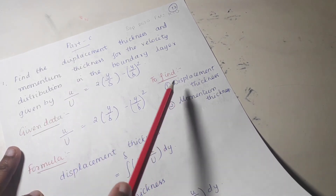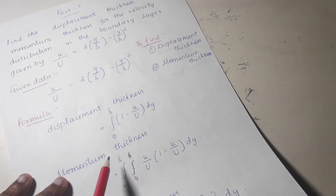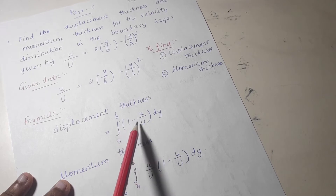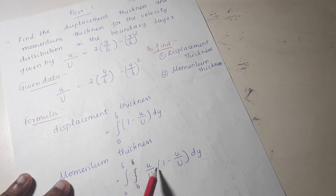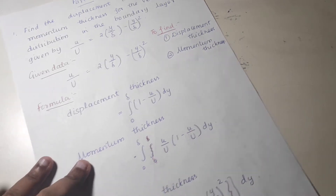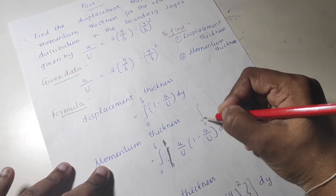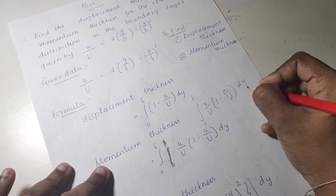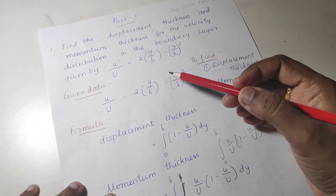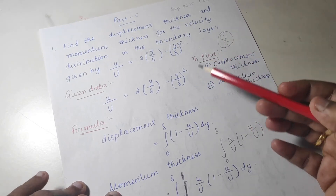The given data is noted. The formula for displacement thickness is the integral of 0 to delta of 1 minus u by U dy. The momentum thickness formula is the integral of 0 to delta of u by U into 1 minus u by U dy — it is one integral, not double integration. This is a simple but very important problem you can expect in every question.